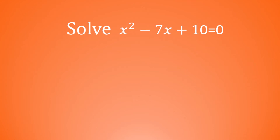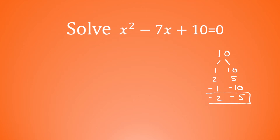Solve x squared minus 7x add 10 is equal to 0. We've got a negative here, but the method is exactly the same. We need to find a pair of numbers that multiply to 10 and add together to make negative 7. We could have 1 times 10 or 2 times 5, but neither of those add to negative 7. The only way to get a positive product and a negative sum is if both numbers are negative — negative 2 times negative 5 gives positive 10, and they add to negative 7. So it factorizes to x minus 2 and x minus 5.